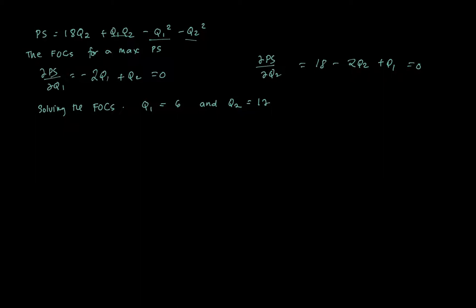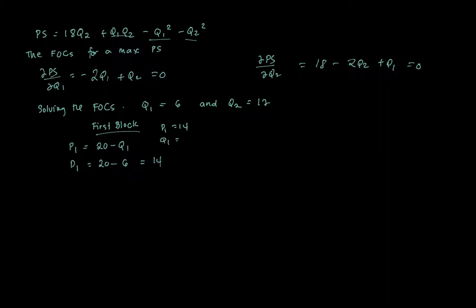For the first block, P1 = 20 minus Q1 = 20 minus 6 = 14. So the price charged in the first block is 14, with Q1 equal to 6.